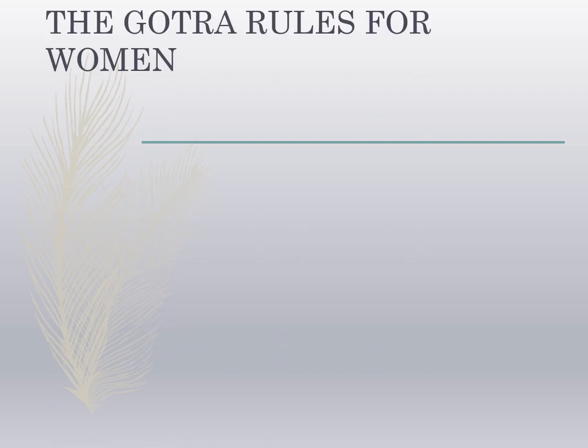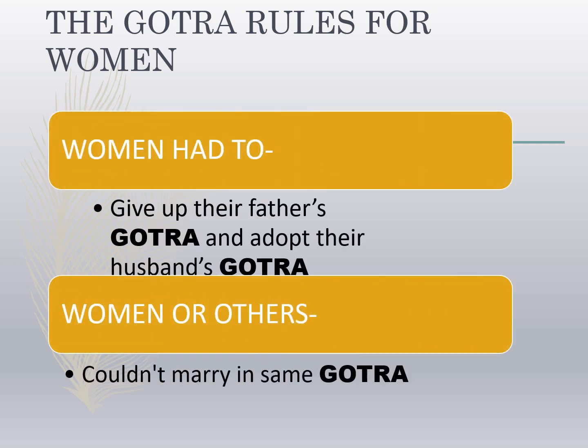Our next topic is gotra rules for women. Gotra is a surname practice of the brahmanical system. Evidence from circa 1000 BCE onward shows people were classified in terms of gotras. Each gotra was named after a Vedic brahman, and all those belonging to the same gotra were regarded as his descendants. Two rules were particularly important: women had to give up their father's gotra and adopt their husband's gotra, and people could not marry within the same gotra.